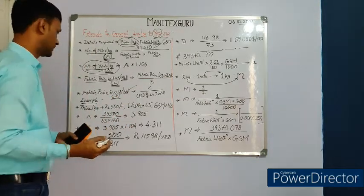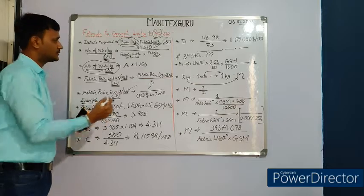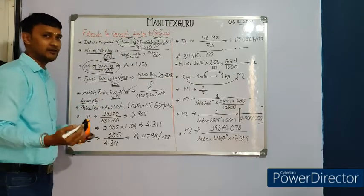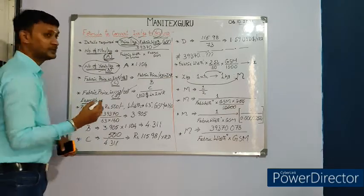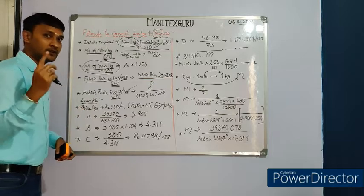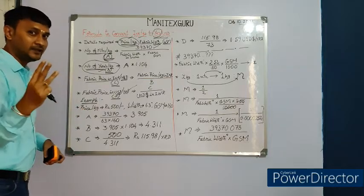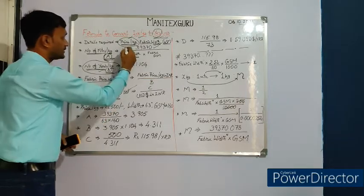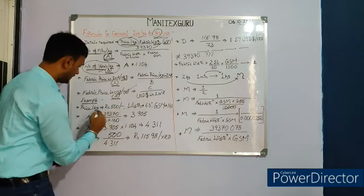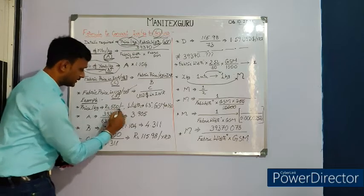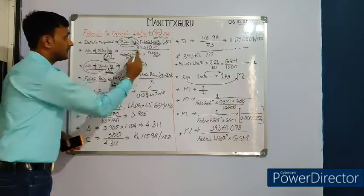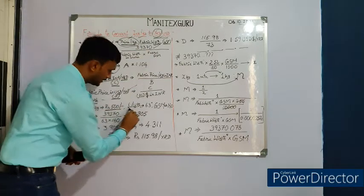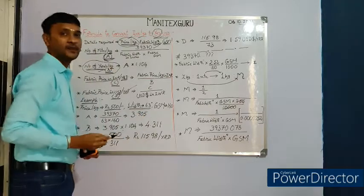To apply all these formulas, let's work through an example. We need three values: fabric price per kg — taken as ₹500; fabric width in inches — taken as 63 inches; and GSM, which will also be used in the calculation.